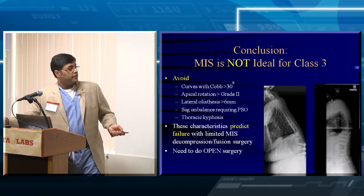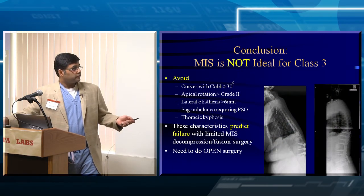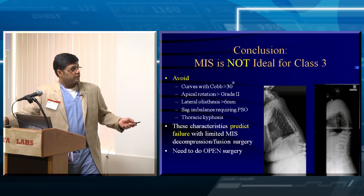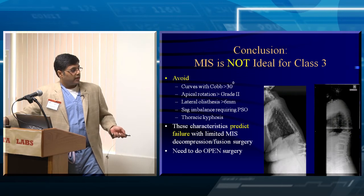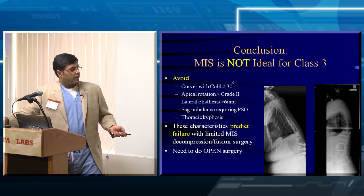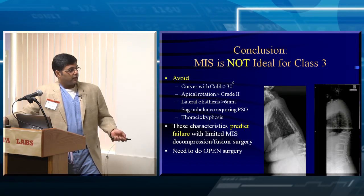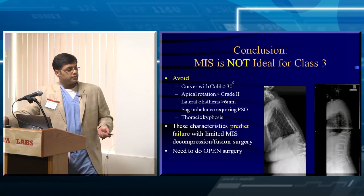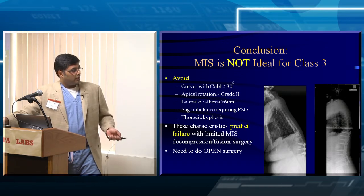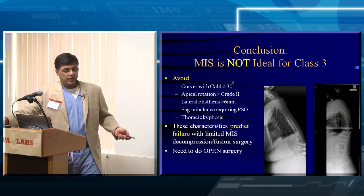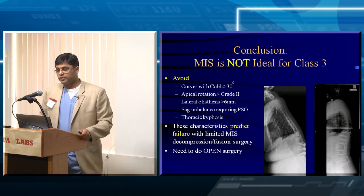Here's the kind of case you don't want to do with MIS: a patient with lateral and anterior listhesis who already has hardware in place and has developed proximal junctional kyphosis over the top. We're not going to be able to correct the SVA or remove that hardware MIS — we have to open this case. We ended up doing a VCR for this patient. These are the kinds of cases that predict failure with MIS.